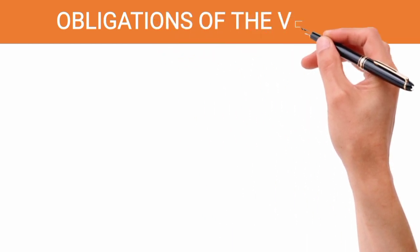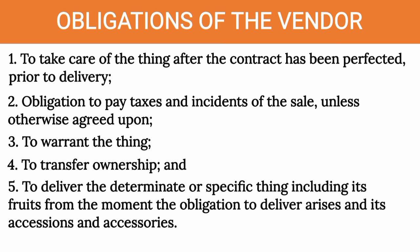So these are the five generic obligations of the vendor. First is to take care of the thing after perfection of the contract but prior to delivery. Second is the obligation to pay taxes and incidental expenses of the sale. As a general rule, it will be the seller who will be liable for the taxes and incidental expenses, subject to stipulation of the parties.